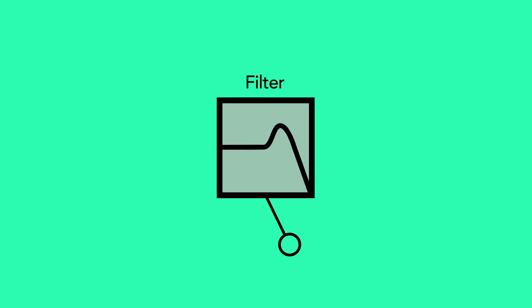When we assign it to the cutoff frequency parameter of a filter, we get a cyclic variation in timbre, which is how we get those cool wobble bass lines.